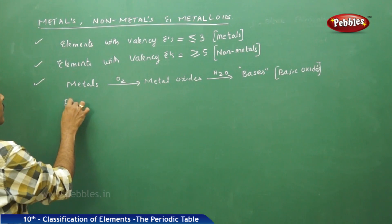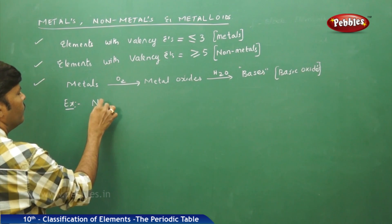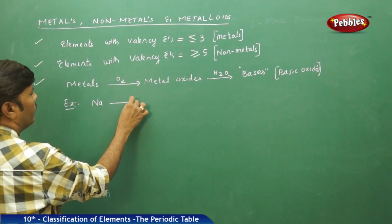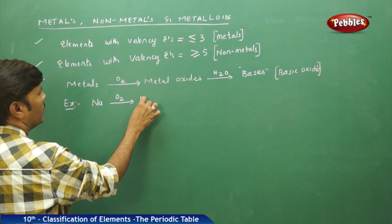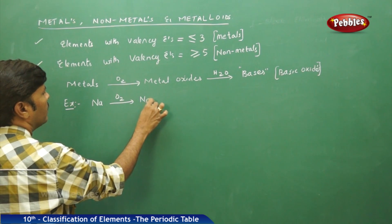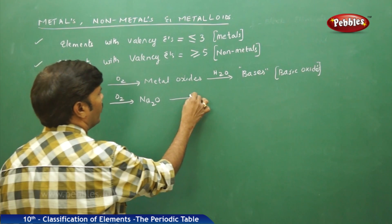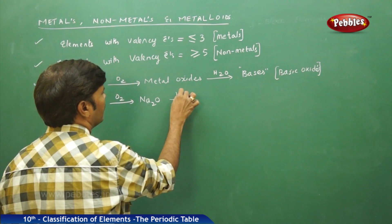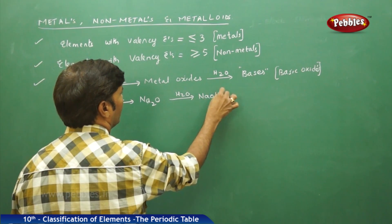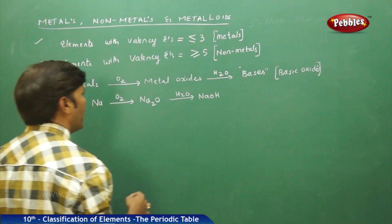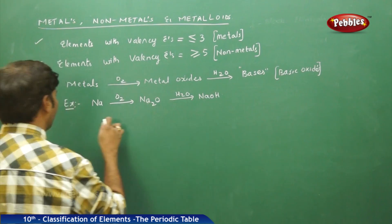We can take a number of examples. Sodium, when it reacts with oxygen, gives sodium oxide. Sodium oxide upon hydrolysis gives sodium hydroxide. Sodium hydroxide is the base, so it is basic in nature.